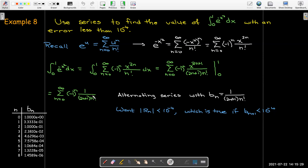So let's go ahead and use some technology and calculate some of the values of b sub n. I can see that when n equals 6, b sub n plus 1, that would be b sub 7, is smaller than 10 to the minus 4. So I'll just add up everything up to b sub 6. So b sub 0 through b sub 6, which gives me about 0.74682.